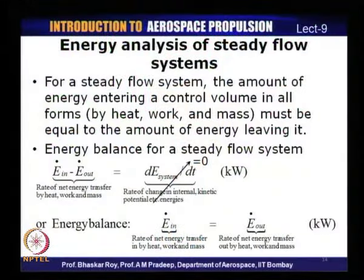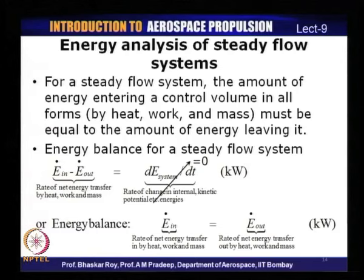The energy balance for a steady flow system is: energy in minus energy out equals the rate of change of energy, but for a steady flow process the rate of change is zero, so energy in equals energy out. The net rate of energy transfer by heat, mass, or work entering equals the net rate leaving the system. This is the energy balance or energy equation for a steady flow process.